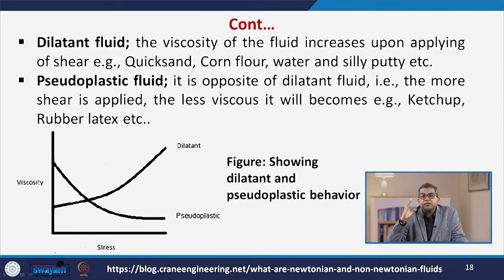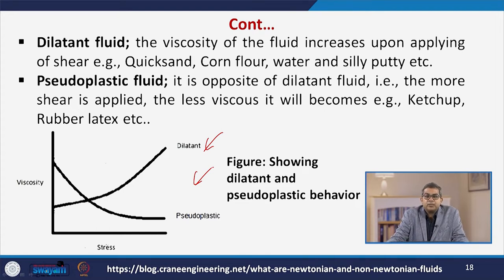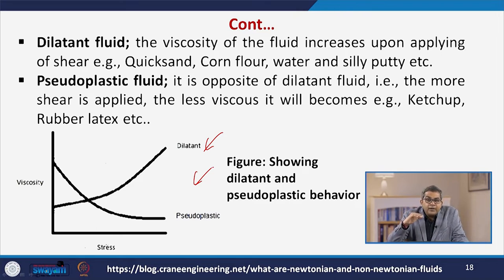For dilatant fluids, viscosity increases upon applying shear — examples are quicksand, cornflour, water, and Silly Putty. Pseudo-plastic fluid is opposite to dilatant: the more shear is applied, the less viscous it becomes — examples include ketchup, rubber, and latex. If we plot the viscosity-stress curve, the dilatant fluid shows increasing viscosity with increasing stress, whereas pseudo-plastic shows decreasing viscosity with increasing shear.